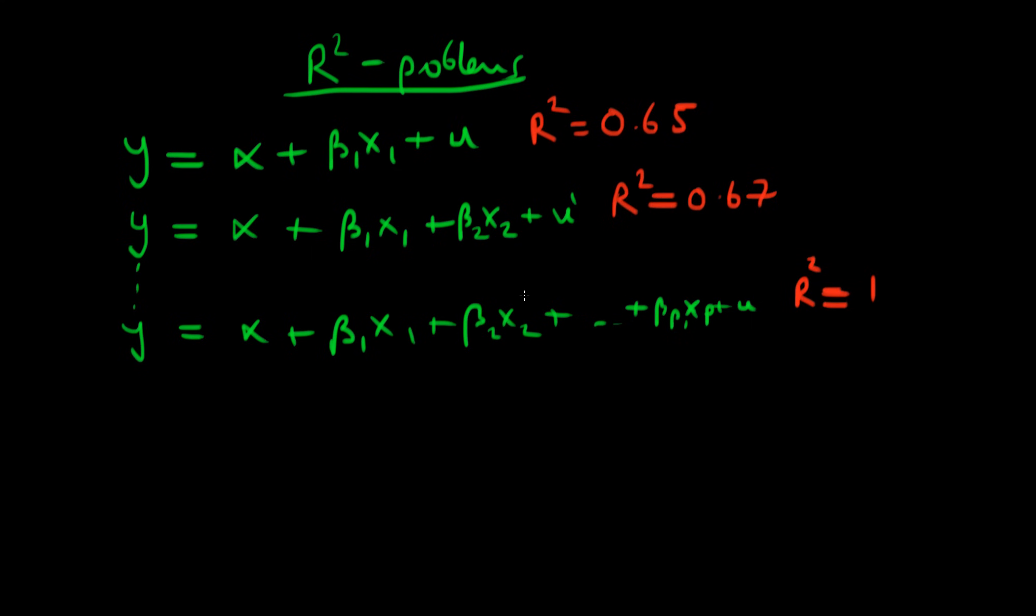And more generally, as I add any more variables to my model, R squared never really decreases. It can stay around the same, but it never decreases. Most of the time it will always increase if you add an extra variable to the model. Whether that extra variable is complete rubbish, or whether it's a significant variable, the R squared will go up in both circumstances.